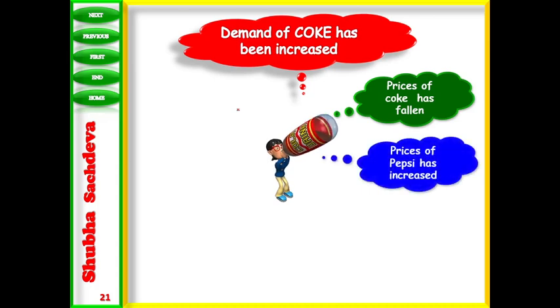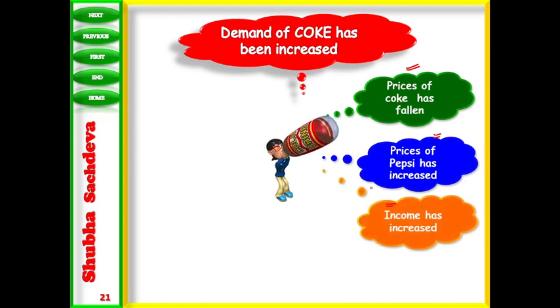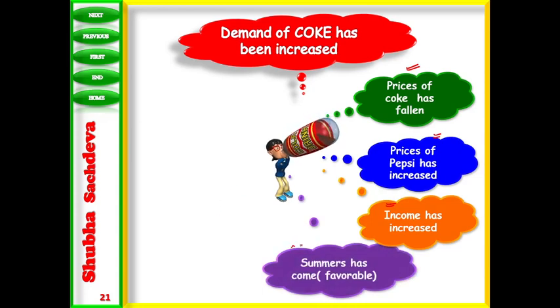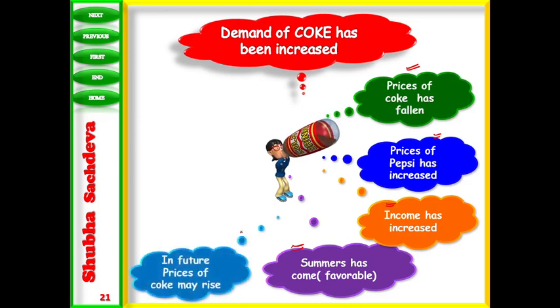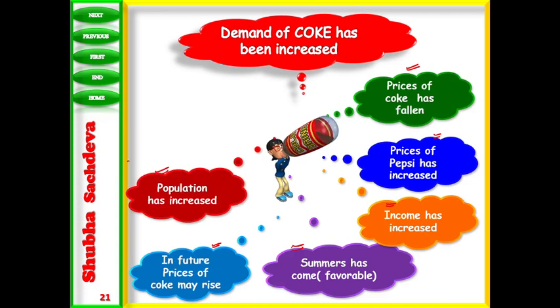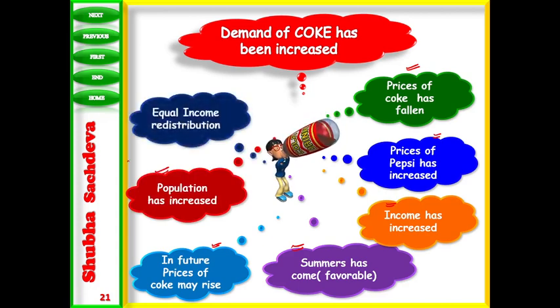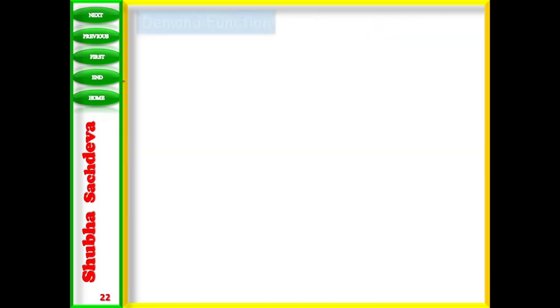You can say demand of Coke has increased. There is a reason behind it. What is possible? First, the price of Coke itself has decreased. Second, the substitute good Pepsi is expensive, so people have shifted to Coca-Cola. Third, income has increased. Fourth, summer season is going on, so cold drink demand has increased. Fifth, population has increased. Last is equal income distribution - when people get equal distribution, their demand will definitely increase.